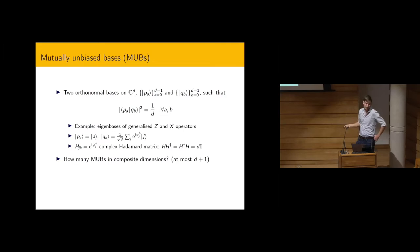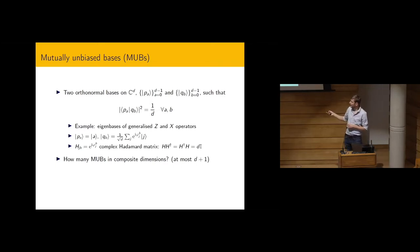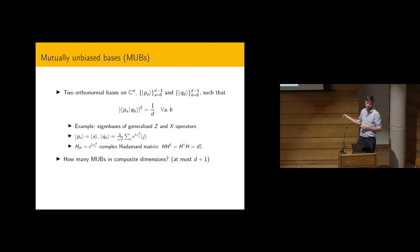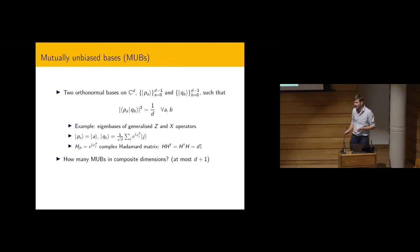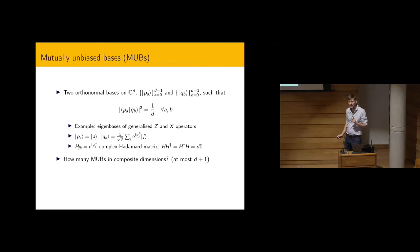A long-standing open problem regarding MUBs is how many of these bases you can find in a given dimension that are pairwise unbiased. It's known that you can have at most d+1 in dimension d, and this is saturated in prime power dimensions, but in composite dimensions it's not really known. The first composite dimension is six. We know there are at least three and at most seven, but in between it's unknown — no one has found a fourth one in about 30 years.